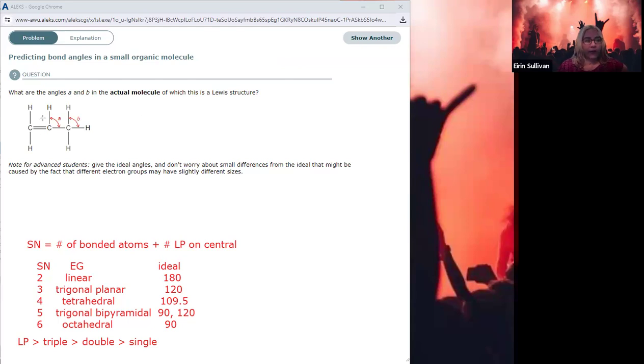So let's take angle A first. Angle A is this carbon-carbon-hydrogen bond. So the central atom in this case is this one right here. First of all, we're going to work out the steric number. I'm just going to call it carbon A.